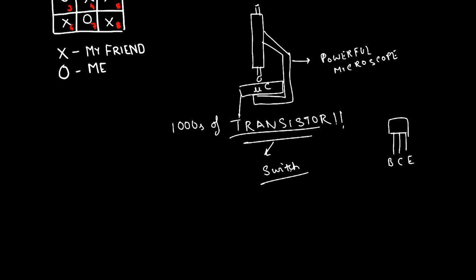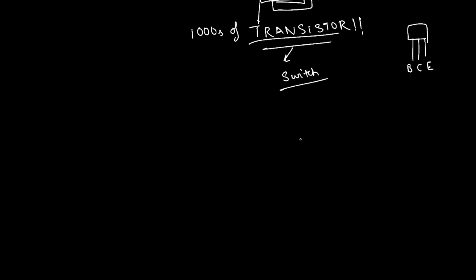I will give a brief illustration here to tell you how a transistor is used as a switch. There are many different kinds of transistors and the type of transistor I am going to show you here is an NPN Bipolar Junction Transistor. This is the first terminal called base, this is collector and this is called the emitter.